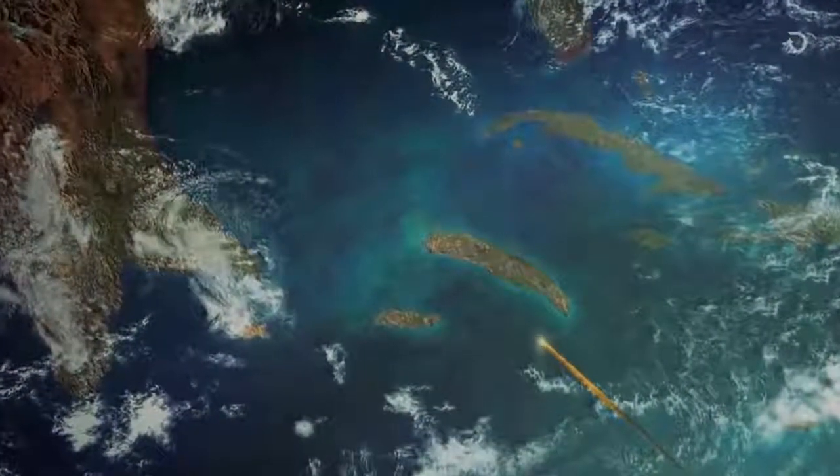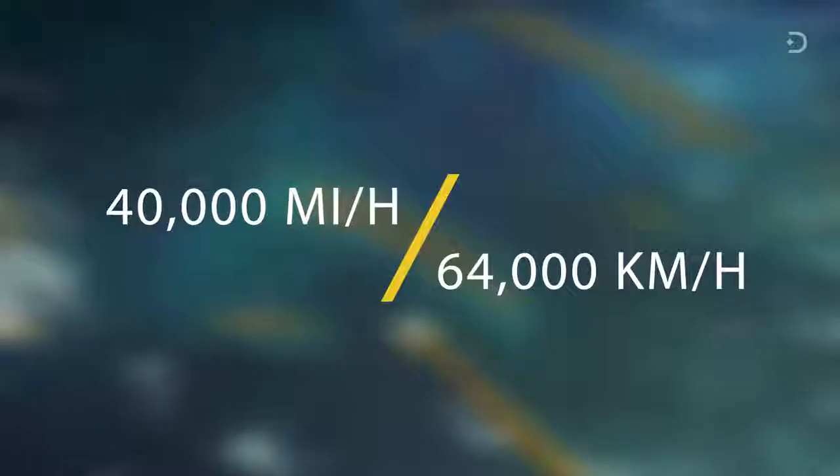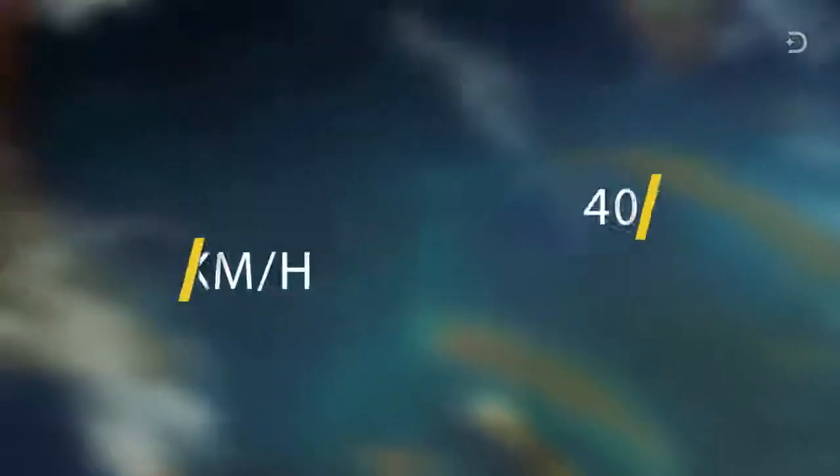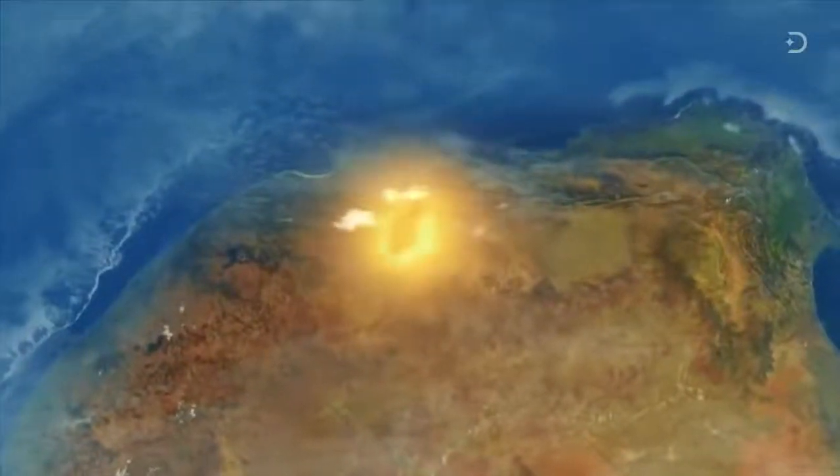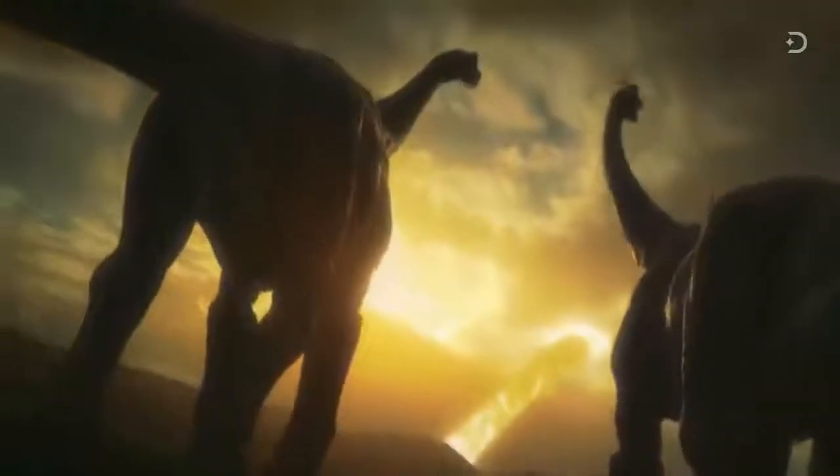an asteroid the size of a mountain is hurtling toward Earth at about 40,000 miles or 64,000 kilometers an hour. For a few fleeting moments, a fireball appears streaking through the sky. It is far bigger and brighter than the sun.